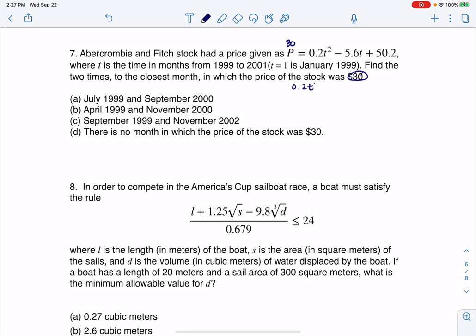I have 0.2T² minus 5.6T plus 50.2 equals 30. To use the quadratic formula, I need to set this equal to 0. Subtracting 30 from both sides gives 0.2T² minus 5.6T plus 20.2 equals 0. You could multiply everything by 10 to remove decimals, but since I'm using my calculator anyway, I'll just run this.